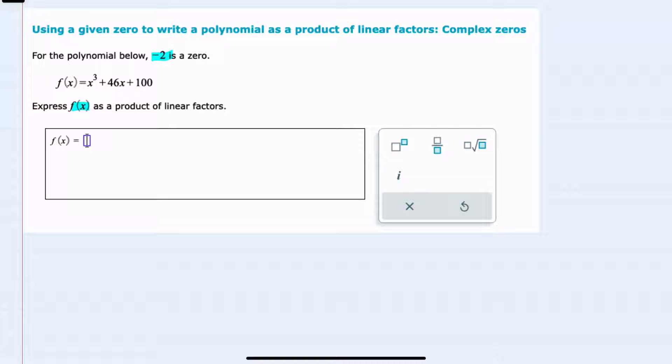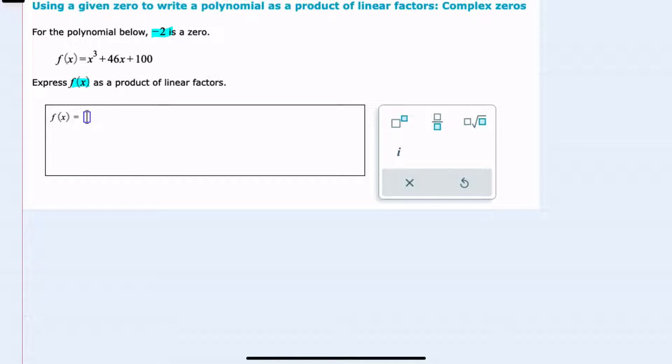I can do that once I find all of the zeros. We're given one of those zeros, so I can start by doing either long division or synthetic division with the given zero that I have. And while both work, for this example, I will use synthetic division.